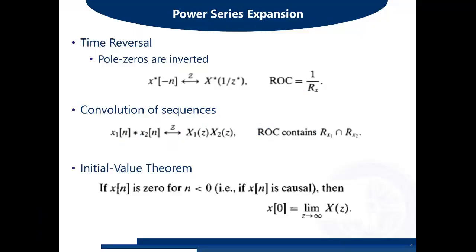Next we have time reversal. If you apply the time reversal property in the time domain, in the Z-domain all the poles and zeros are inverted — meaning if a pole is located at 2, it will go to 1/2. When you reverse a time domain sequence, if it was originally a right-sided sequence, after reversal it becomes a left-sided sequence. A causal sequence will not remain causal after reversal, resulting in the inversion of the ROC: ROC becomes 1 over R_X.